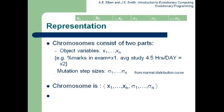How are chromosomes represented in evolutionary programming? The object variables are indicated by x1, x2, ..., xn. For example, x1 may indicate the percentage of marks and x2 may indicate the number of hours you study in a day. The next part is the mutation step size, indicated by sigma. This is the difference between a normal GA chromosome and this one — sigma decides how the parent solution will be changed to create a new child.